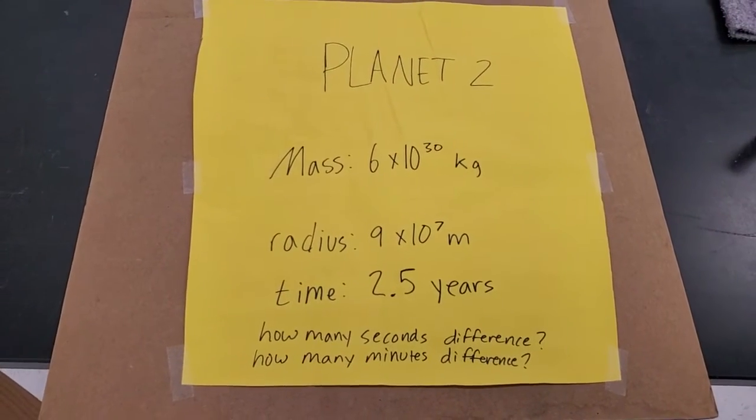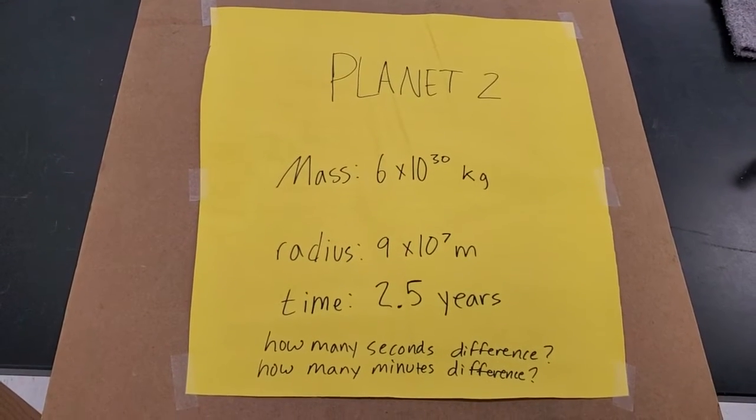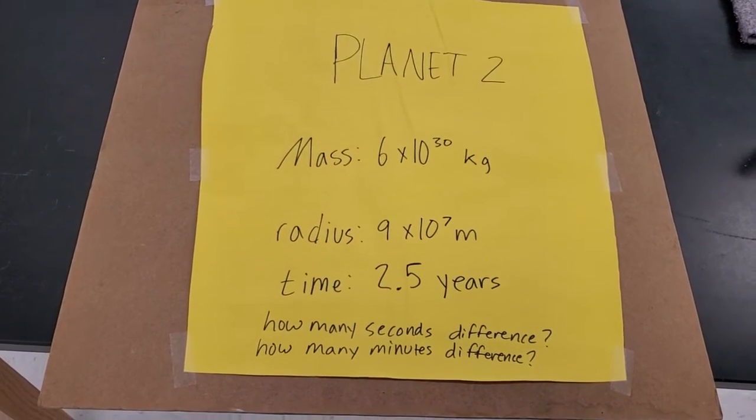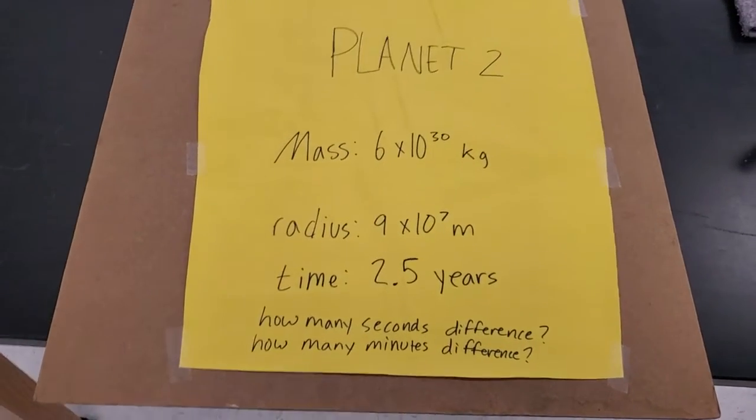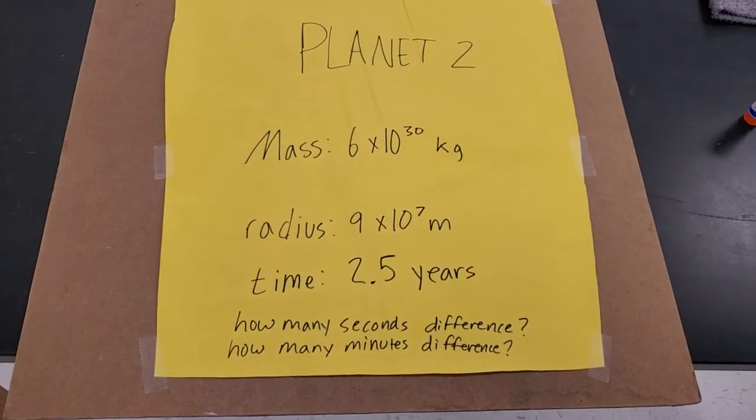Planet 2, here we go, a mass of 6 times 10 to the 3rd kilograms, a radius of 9 times 10 to the 7 meters, and you spend a time away from the planet of 2.5 years. How many seconds difference? How many minutes difference now? So we go from seconds to minutes.